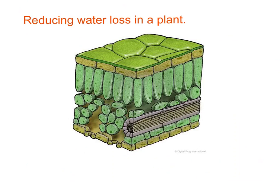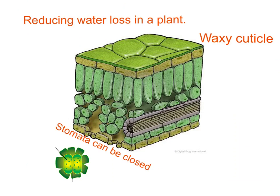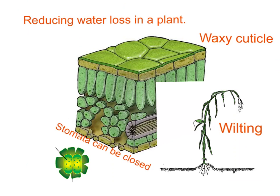Stomata close during the night to conserve water. How else is the leaf adapted to restrict water loss? Firstly, by having a waxy cuticle as the top layer — a waterproofing layer to stop water escaping. Secondly, by having stomata that can close, limiting water lost during the night. And thirdly, in really dry weather plants wilt, hanging their leaves, and the stomata automatically close. So three ways plants reduce water loss: waxy cuticle, closeable stomata, and wilting in dry weather.